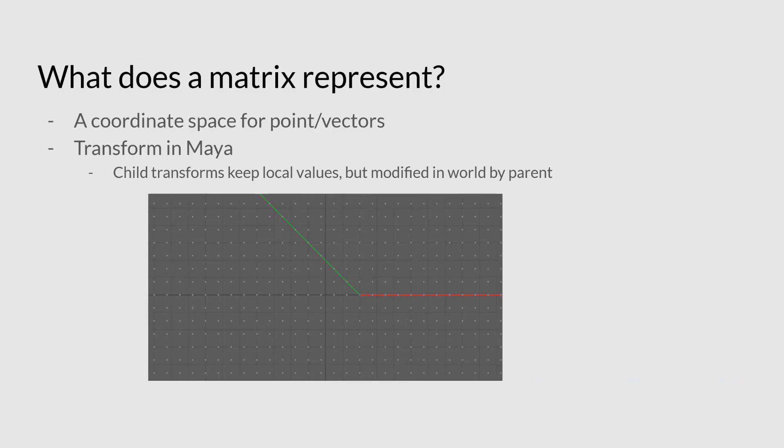Now, so what happens is as soon as you start to modify that top group, you will start to modify all of the children of that group as well. But we don't change the values of that because it's happening in that coordinate space. It's basically happening locally to that space. And that's basically what we're doing when we're manipulating a matrix is that we're manipulating a whole space.